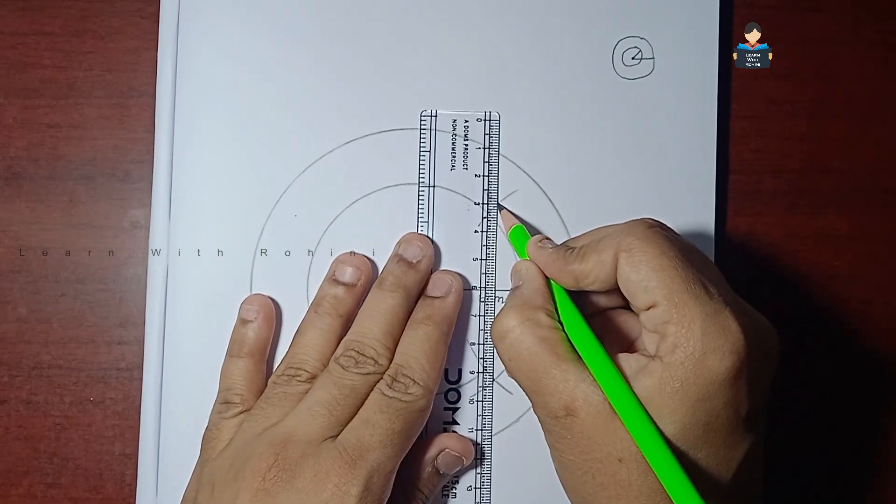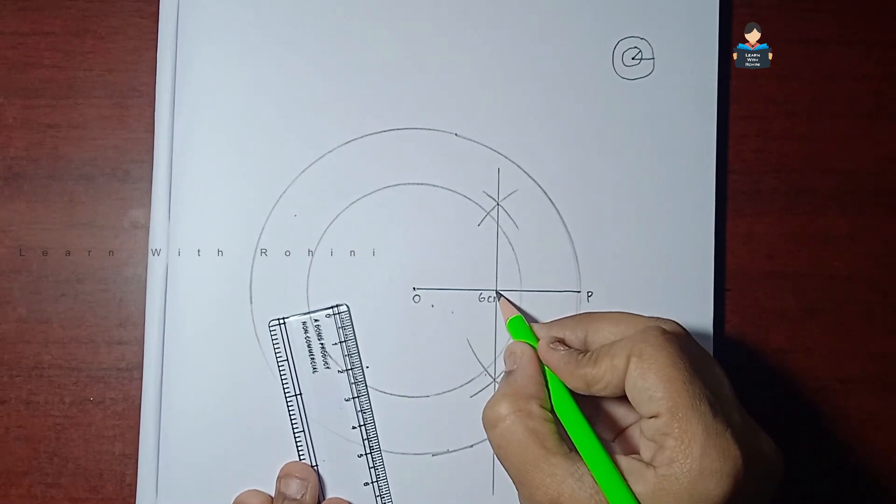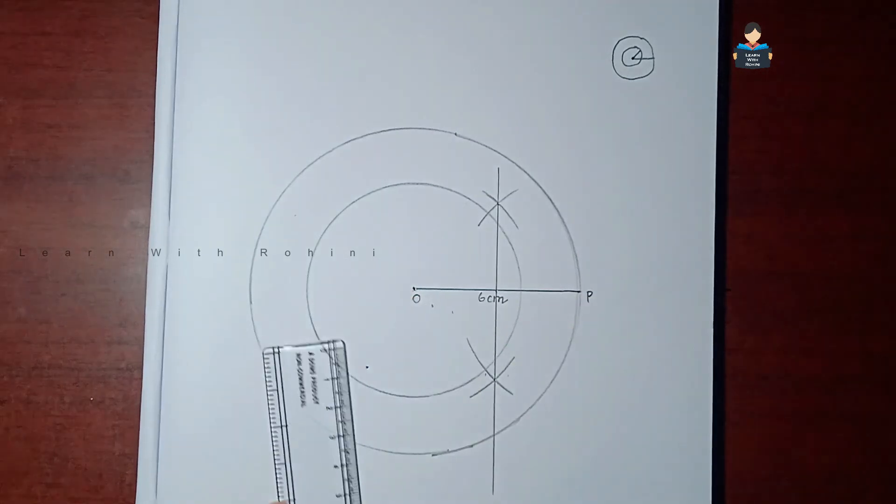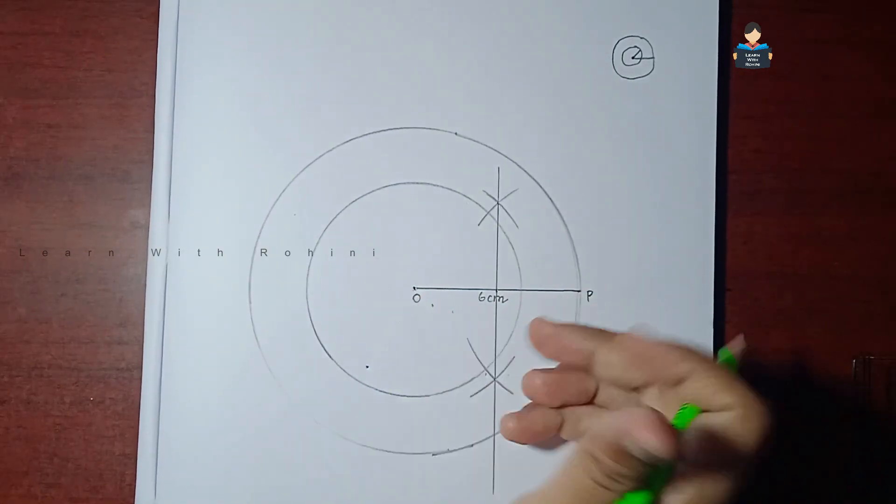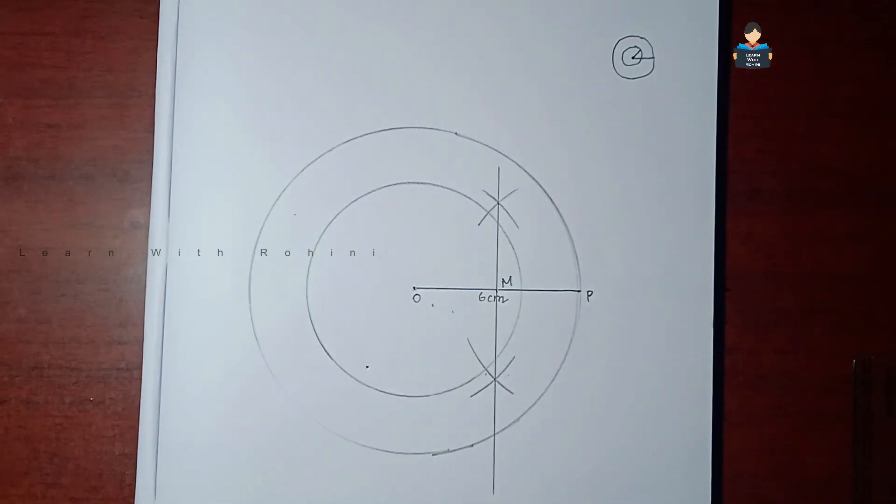Once we join the two points, this line will meet. And this is the midpoint of this line. This is the midpoint. In the line, this is the midpoint. This is the number M. Now what do we do next?